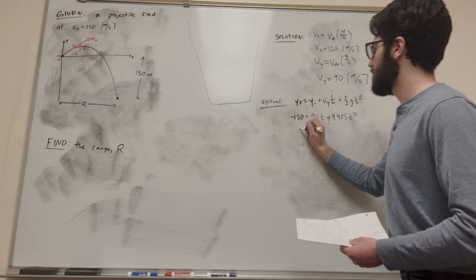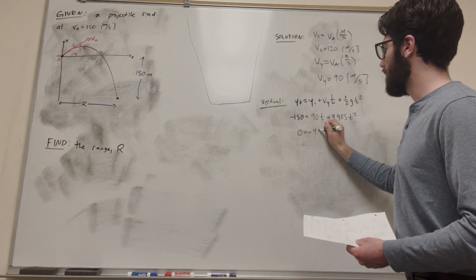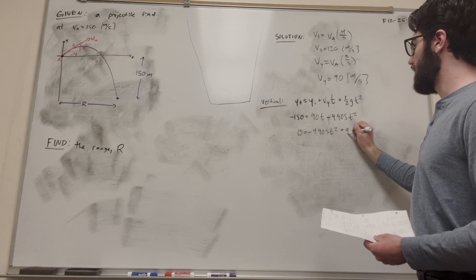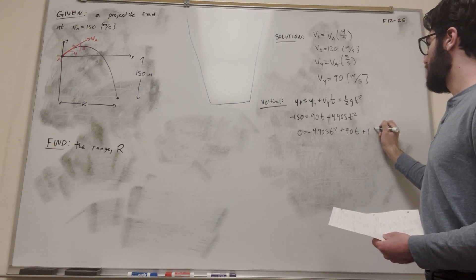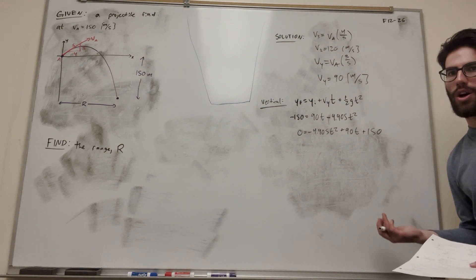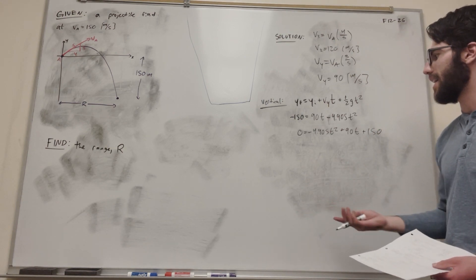So let's move everything to the other side. So we're going to get zero, and then let's set it up in order. So it's going to be negative 4.905 t squared plus 90 t plus 150. And now you'll notice that we have something that we can plug into the quadratic equation. Negative b plus or minus the square root of b squared minus 4ac over 2a.